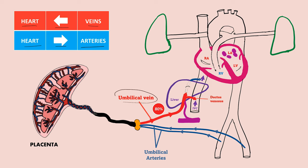The umbilical vein carries oxygenated blood from the placenta to the fetus. That is why we call it the umbilical vein. The umbilical arteries carry deoxygenated blood from the fetus to the placenta. That is why we call them the umbilical arteries.